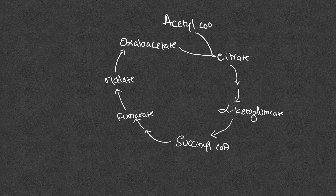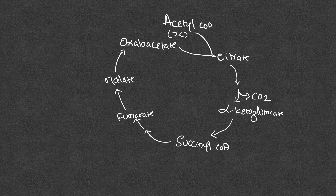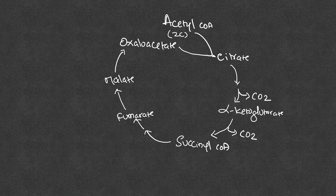Overall, the TCA cycle oxidizes acetyl-CoA, which has two carbons. Those two carbons are released as CO₂: one carbon dioxide is released in the isocitrate dehydrogenase reaction, and the second is released in the alpha-ketoglutarate dehydrogenase complex reaction. The remaining molecules are converted back to oxaloacetate. That is the catabolic part of the TCA cycle.